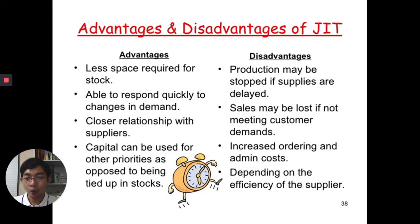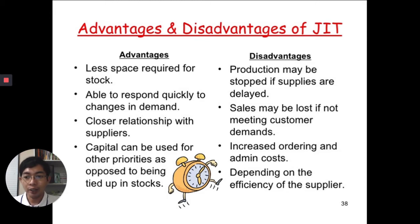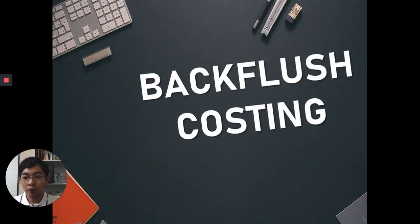On the other hand, the limitations of JIT are: production may be stopped if supplies are delayed, specifically if there is a force majeure caused by fire, typhoon, or other calamities. Next, sales may be lost if customer demands are not met — in business it is better to have surplus instead of shortages, because if you have shortages and customers order from you and you cannot serve them, you will have an opportunity loss. There are also increased ordering and administrative costs. Lastly, JIT depends on the efficiency of the supplier, so you need to screen those suppliers who can fulfill your needs and maintain a close relationship with them.